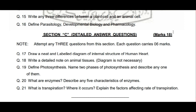Section C ka pehla question hai: 'Draw a neat and labeled diagram of internal structure of human heart.' Human heart ka internal structure draw karna hai, labeling bilkul clear aur readable honi chahiye. Second question hai: 'Write a detail note on animal tissues.' Animal tissues pe detail note likhna hai — four types ke animal tissues hain, un charon ko thoda thoda discuss karna hai.